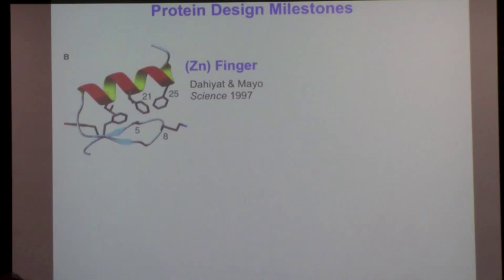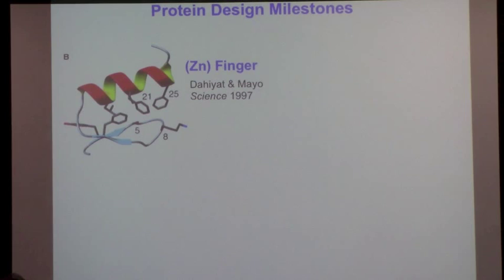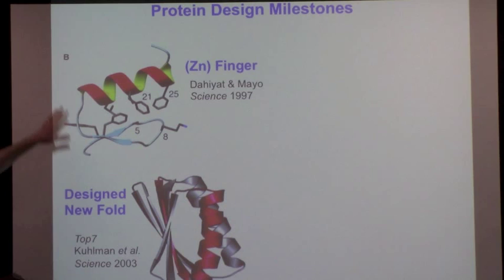This is the H3 loop, most important for binding. We get these predicted within an angstrom in some cases, not all cases. This is a blind prediction where drug companies had antibodies, they gave us sequences and we predicted them, and afterward they showed us the structures. These are selected results. There's a lot of results that don't come out right and that's why it's still research.